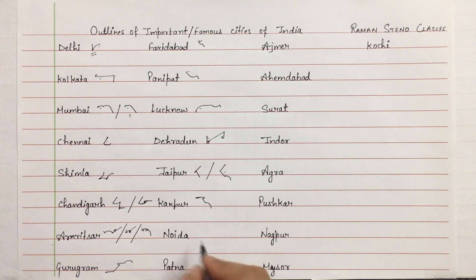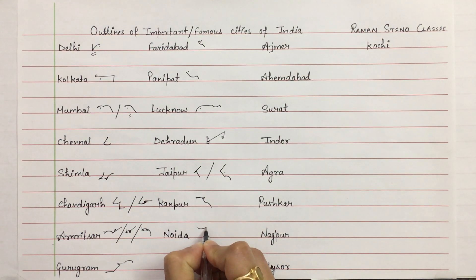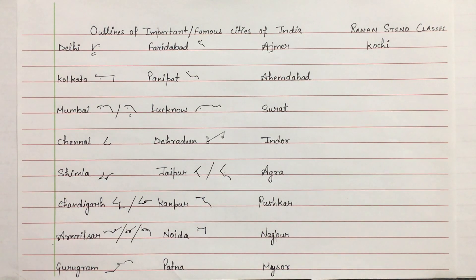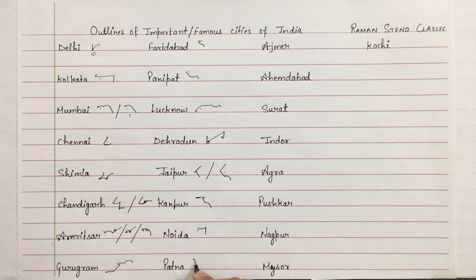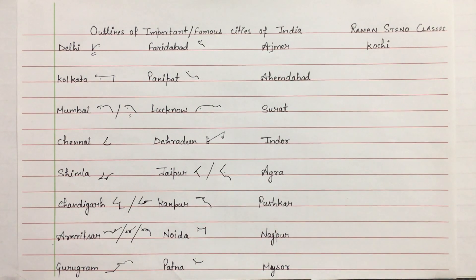Noida — above the line. N, N and D, place the vowel Oy. Noida. Patna — P, we will do half for T addition, then N. Patna.